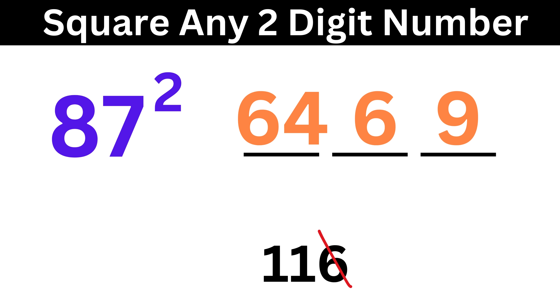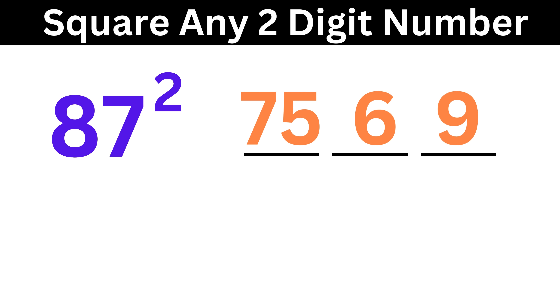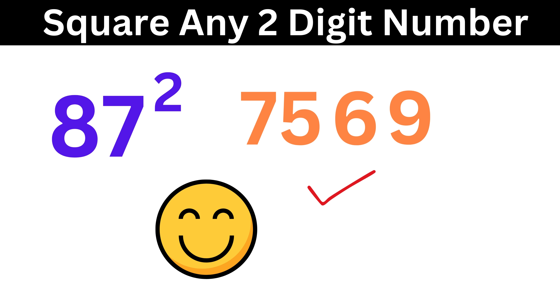So write 6 here and carry this 11 here. Now add this 11 with 64 to make it 75, and we are done. The answer is 7569. Isn't this out of this world? See how quickly we are able to find the square of any two-digit number using this crazy trick.